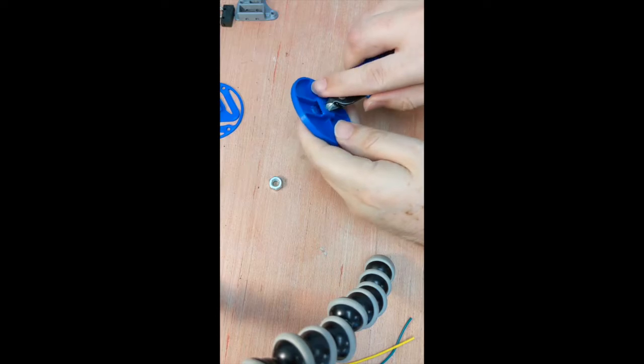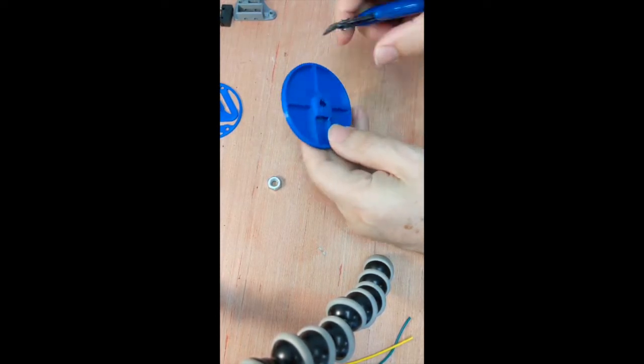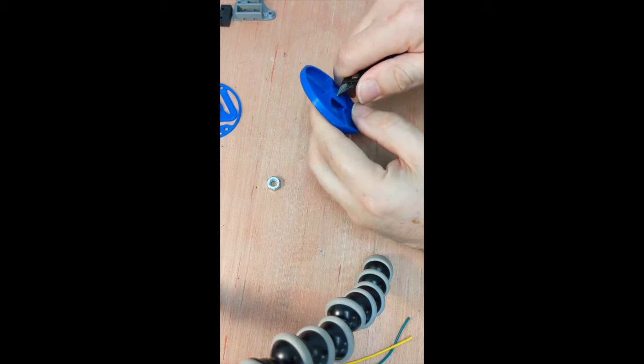First, let's prepare the switch button. Using a flush cutter or craft knife, remove all support materials from the hole.